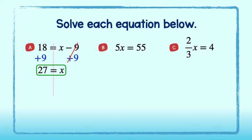In part b, we must divide by 5 on both sides. The left side reduces to 1x, and 55 divided by 5 is equal to 11. The solution is 11.